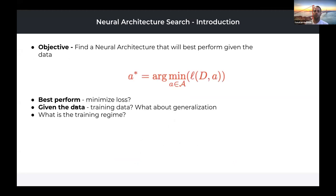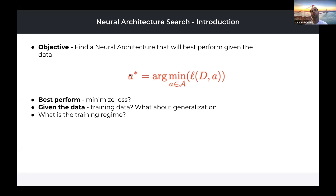Let's formulate what neural architecture search is. The most simple problem definition is: find a neural architecture that will best perform given the data. We can express this as an equation — we want to minimize the loss given the data and the neural architecture, where the architecture is selected among a large set of candidate architectures. We select A-star, the best neural architecture that minimizes this loss. But we should ask: what does 'best performed' mean? Are we only interested in minimizing the loss, or is this multi-objective?